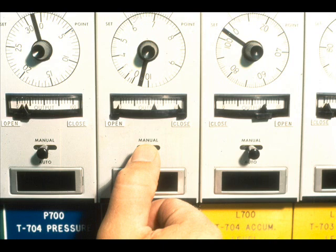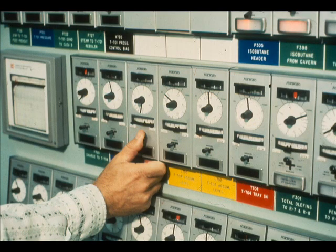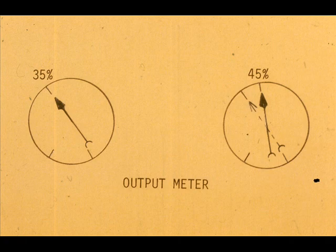First, put the controller on manual. Line out the process at some desired place on the chart and observe the percent of output to the control valve. Make a definite percent change in the controller output — this can be measured on the output meter. We will make a ten percent change; this is an arbitrary number. The smaller the percent change, the less upset to the process.